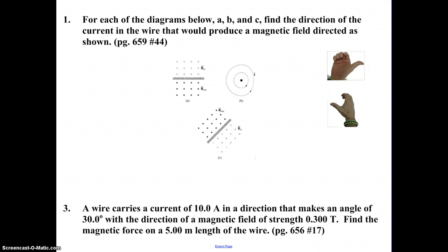For each of the diagrams below, A, B, and C, find the direction of the current in the wire that would produce a magnetic field directed as shown.